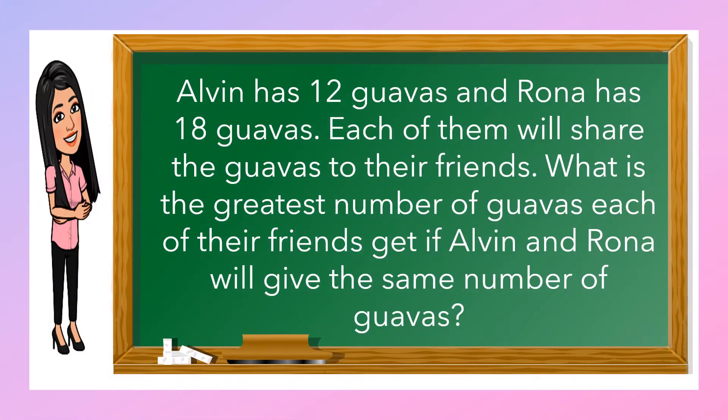Let us try this one. Albin has 12 guavas, and Rona has 18 guavas. Each of them will share the guavas to their friends. What is the greatest number of guavas each of their friends can get if Albin and Rona will give the same number of guavas?